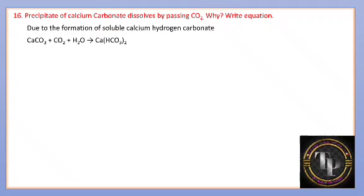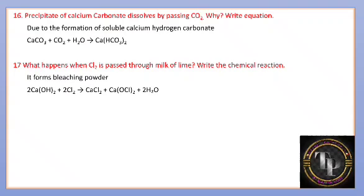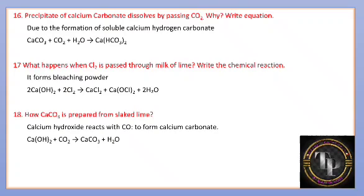What happens when Cl2 is passed through milk of lime? When Cl2 is passed through milk of lime (calcium hydroxide), bleaching powder, CaOCl2, is formed. How is CaCO3 prepared from slaked lime? Calcium hydroxide reacts with CO2 to form calcium carbonate: Ca(OH)2 + CO2 → CaCO3 + H2O.